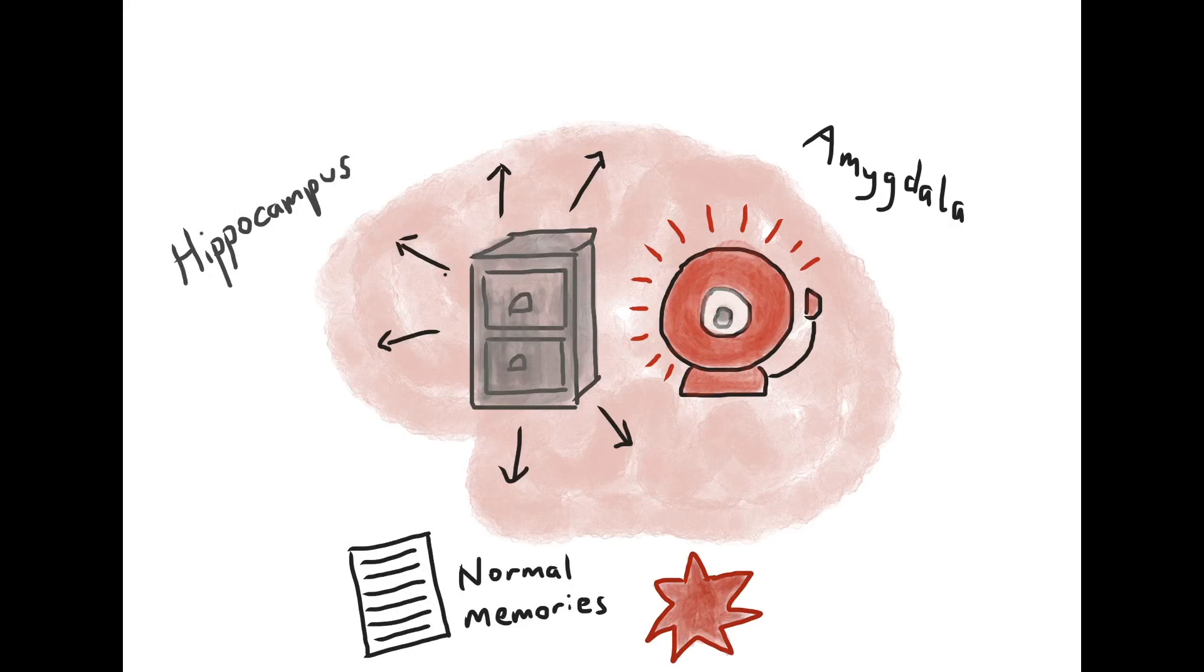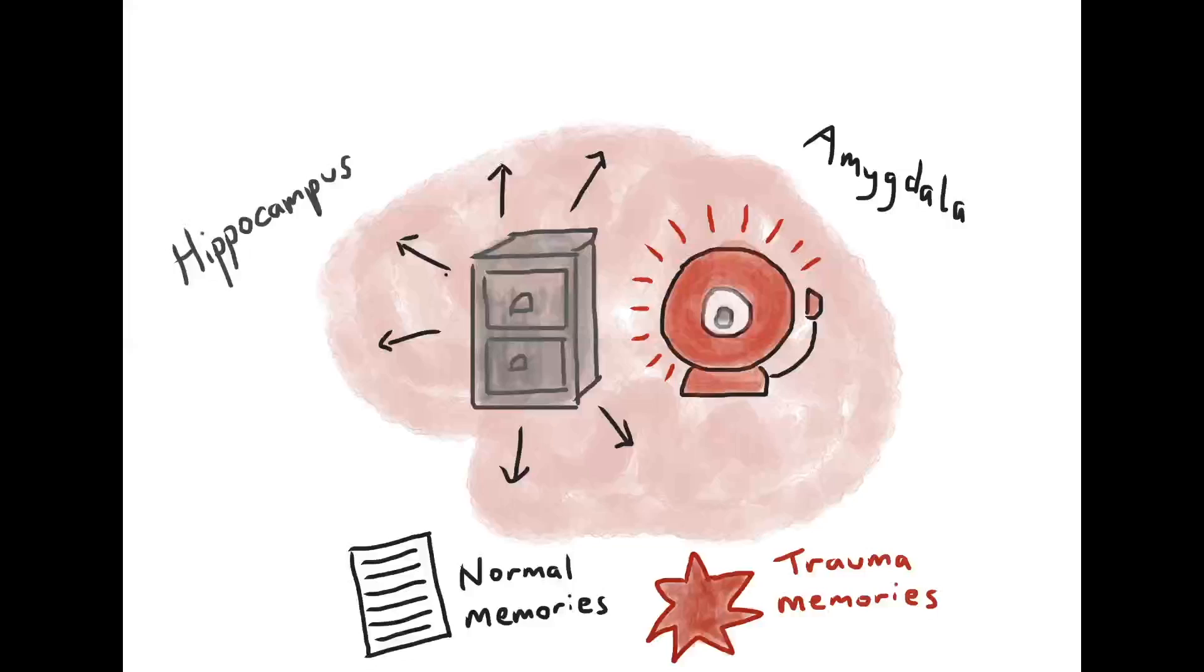Trauma memories have different characteristics to normal memories. I like to think of them as these red spiky fragments. They are generally not well organized and sequential. They are fragmented. You have little control over the retrieval of these memories, which means they tend to come back involuntarily, without warning.